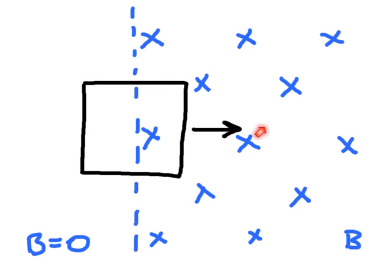It's going to move from an area where there's no B field into an area where there is B field, and the B field is going to be into the plane here. And the question is, how is current going to behave in this loop?